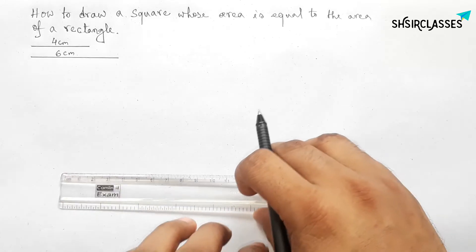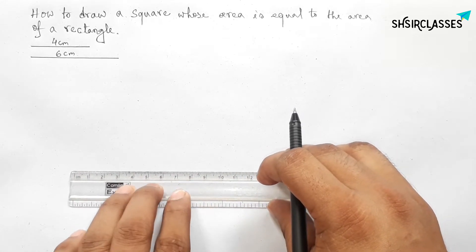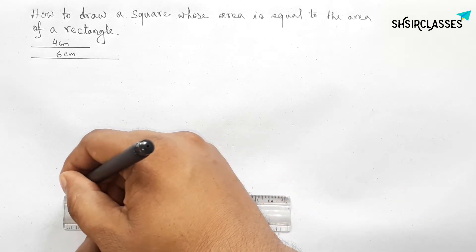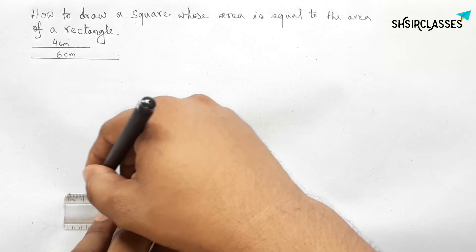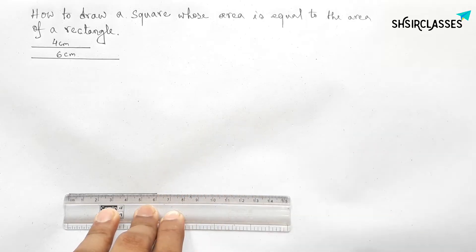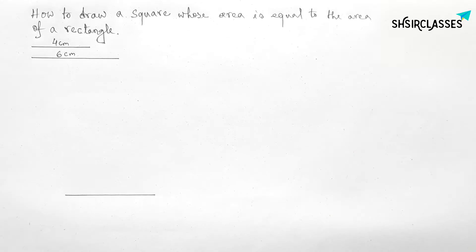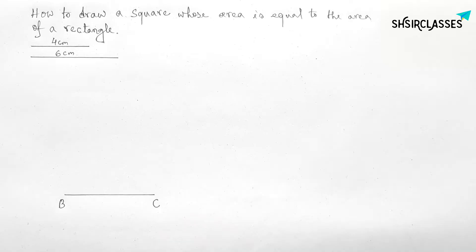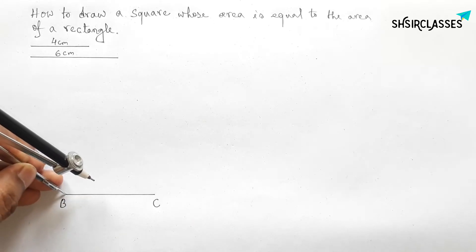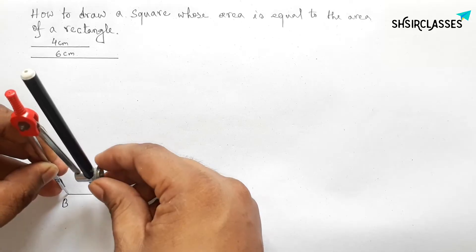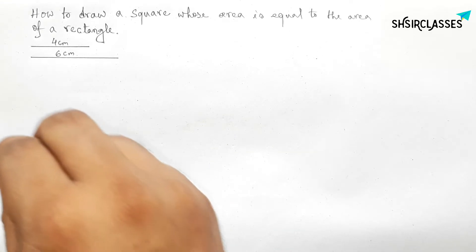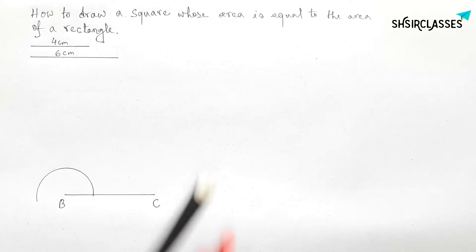This is 4 centimeters and this one is 6 centimeters. Now drawing a line segment of length 6 centimeters — this is the 6 centimeter line segment. Labeling here point B and here point C. Next, drawing a 90-degree angle at point B.